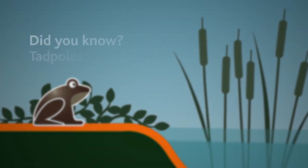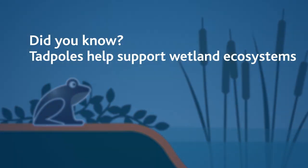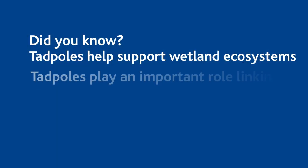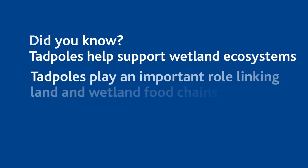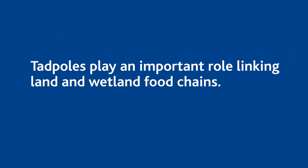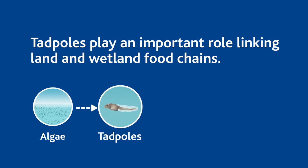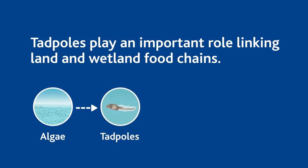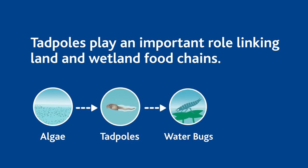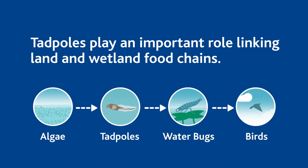Did you know tadpoles help support wetland ecosystems? Tadpoles play an important role linking land and wetland food chains. Tadpoles graze on algae, which helps regulate the growth of algae. Tadpoles in turn become food for predatory water bugs and wetland birds, helping support the presence of these creatures at wetlands.